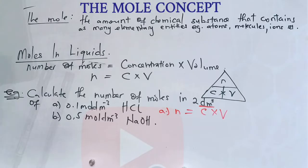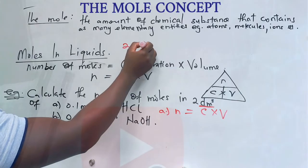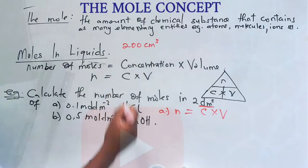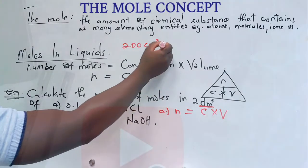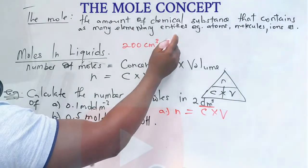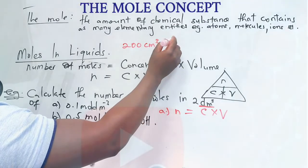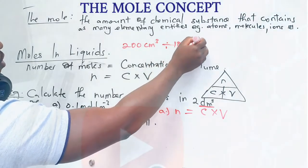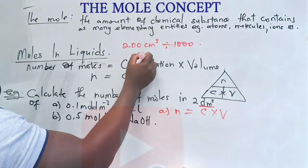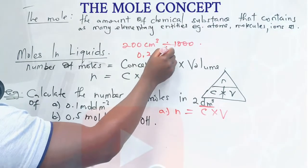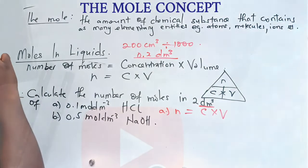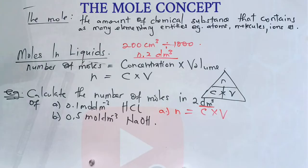For example, we can be given 200 cubic centimeters. We want to convert it to cubic decimeters. So what we do, we divide by 1,000. Divide by 1,000, then this will give us 0.2 cubic decimeter. So that's how you go about it, that's what you are supposed to do if you are given your volume in cubic centimeters.